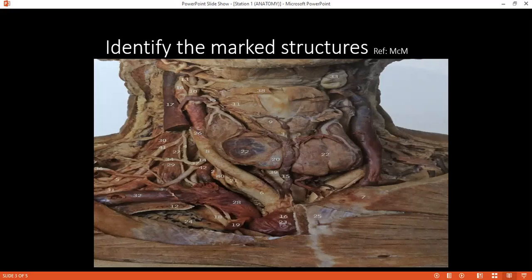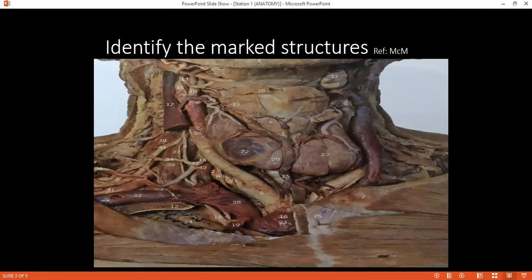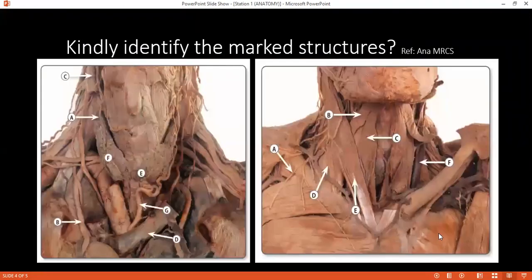Examiner: Can you tell me the muscles of mastication, or have you read about the tongue — can you please tell me the nerve supply of the tongue? How is the tongue divided? Student: It is divided into anterior two-thirds and posterior one-third. The tongue has extrinsic and intrinsic muscles.